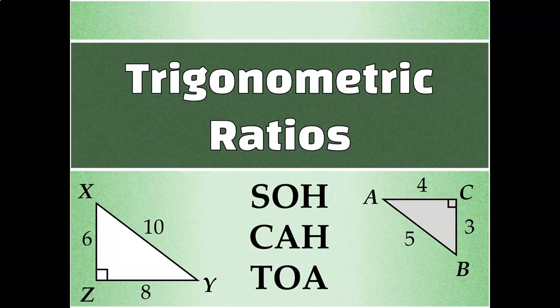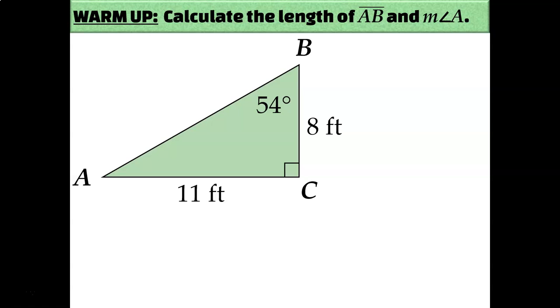Let's talk about trigonometric ratios: sine, cosine, and tangent, and cosecant, secant, and cotangent. But first, let's review what we already know about right triangles.